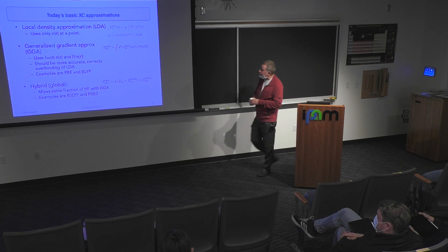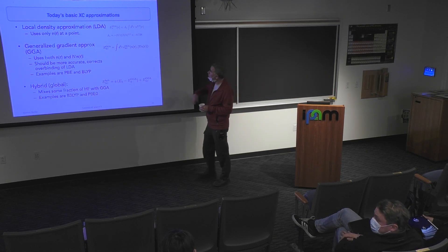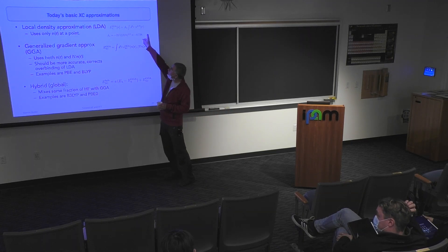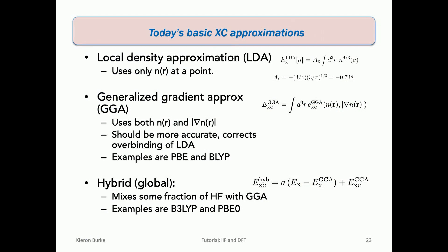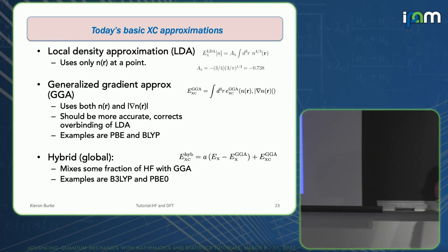The basic exchange-correlation approximations are: the local density approximation (LDA), a simple integral over the density just like Thomas-Fermi; the generalized gradient approximation (GGA), which uses a function of both the density and its gradient; and hybrids, which mix some Hartree-Fock exchange with your GGA. These are the three basic forms, with many, many variations these days.